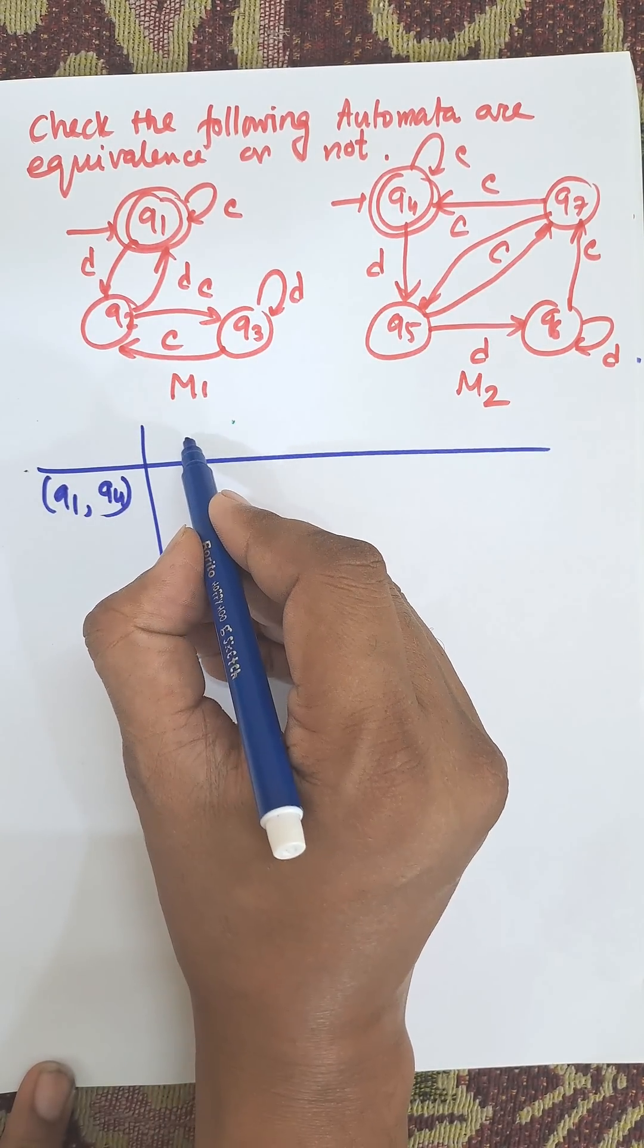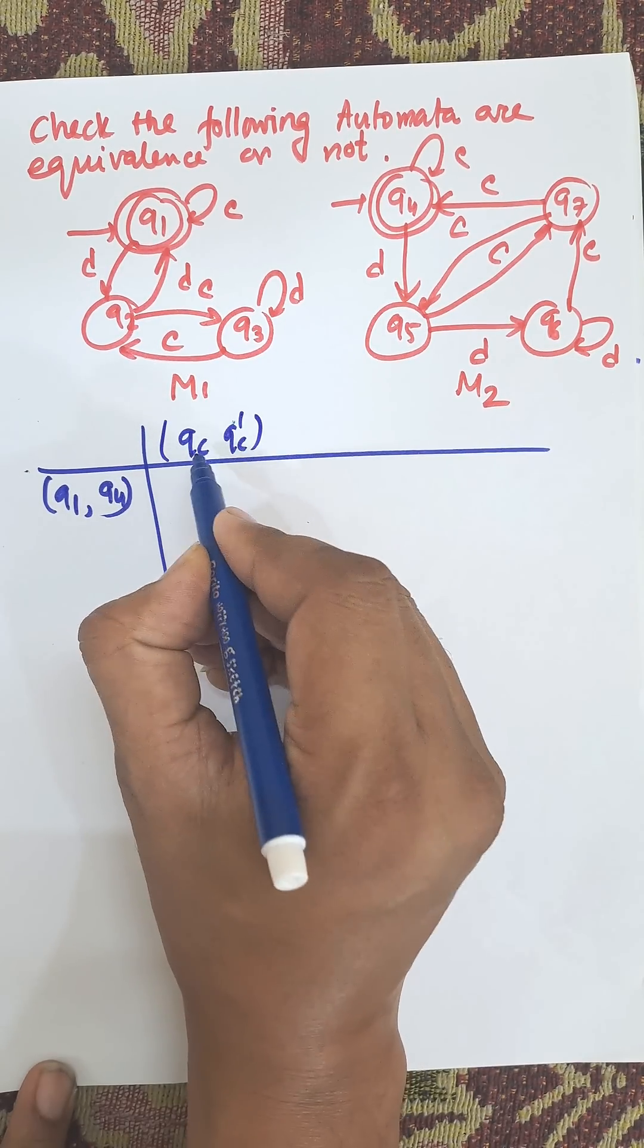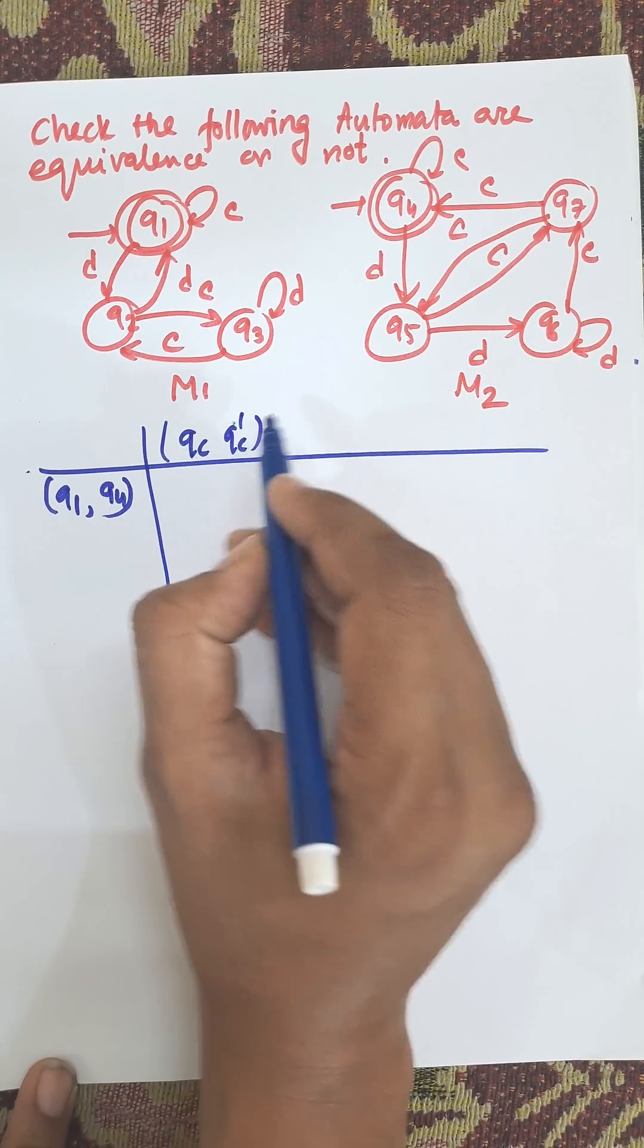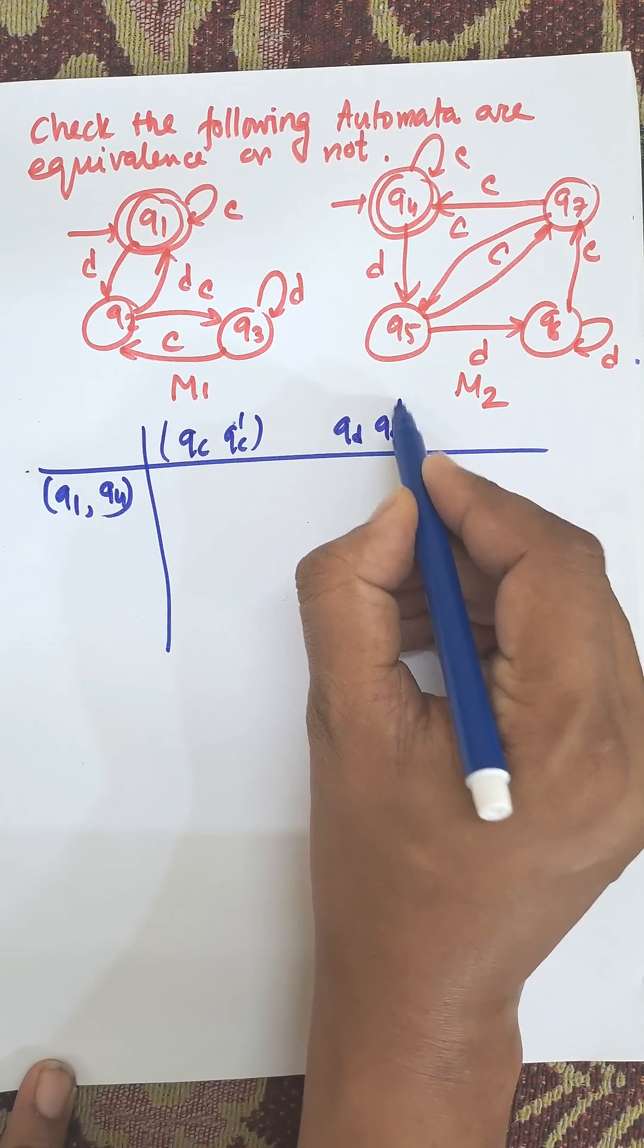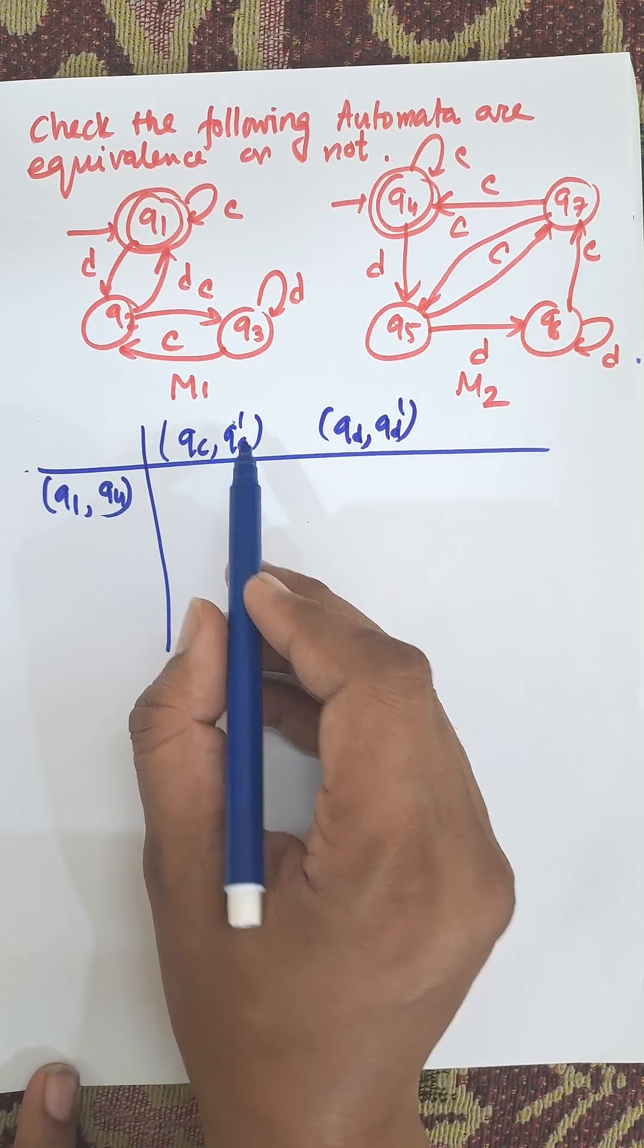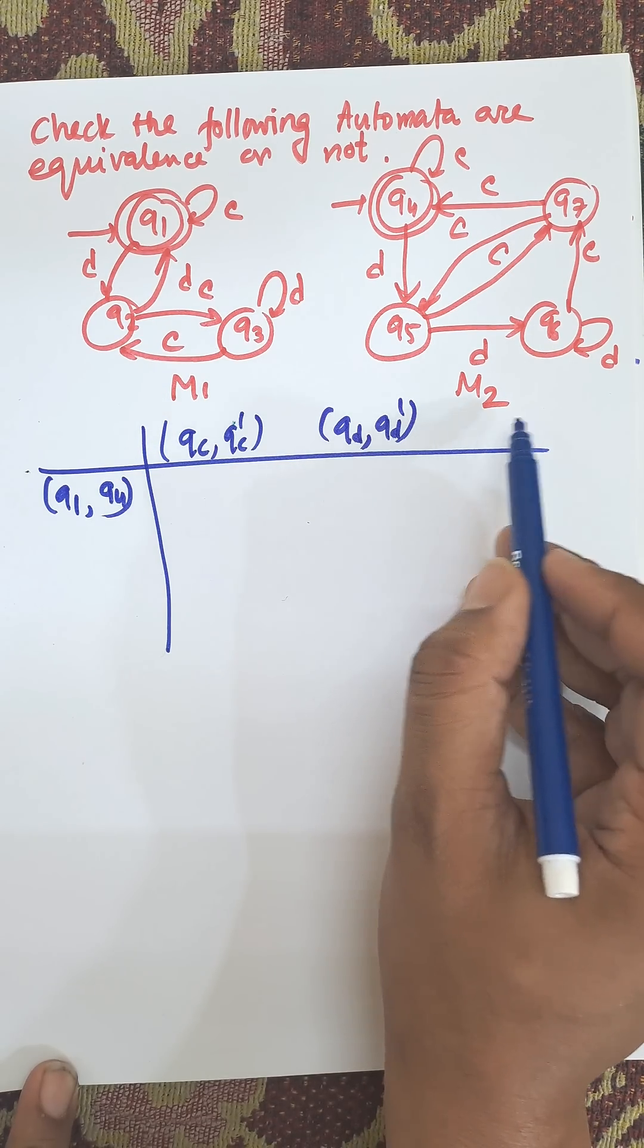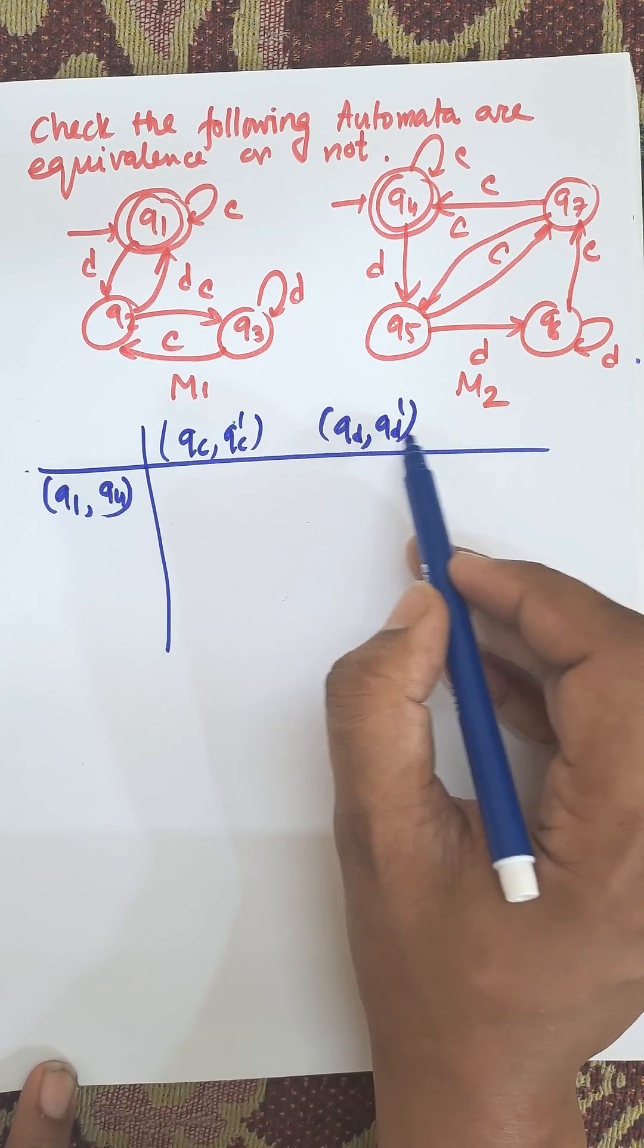Now there are two inputs C or D. Then this one is QC, QC dash, this is for machine M1 and this is for machine M2. QD, QD dash, as there are two inputs C and D, so we will apply QC QC dash, QD QD dash. If there are another input, then that will be QD QE, QE QE, or QE QD E.